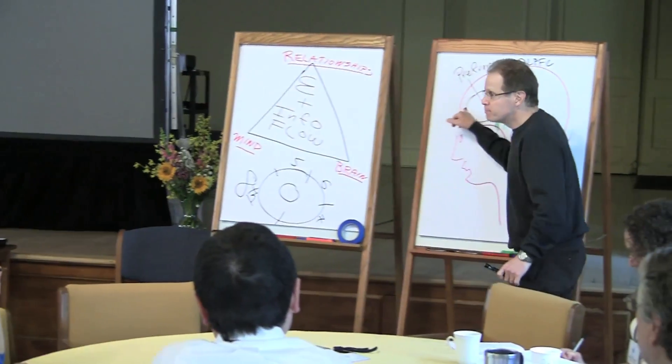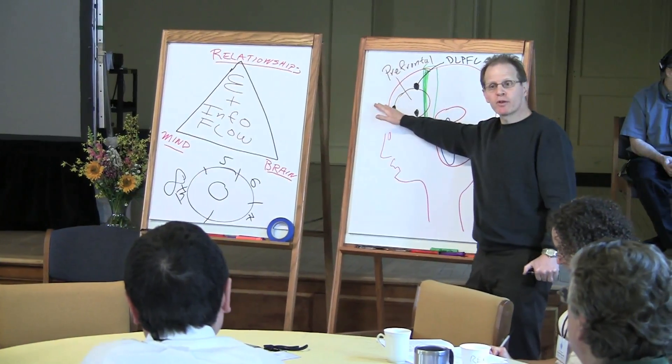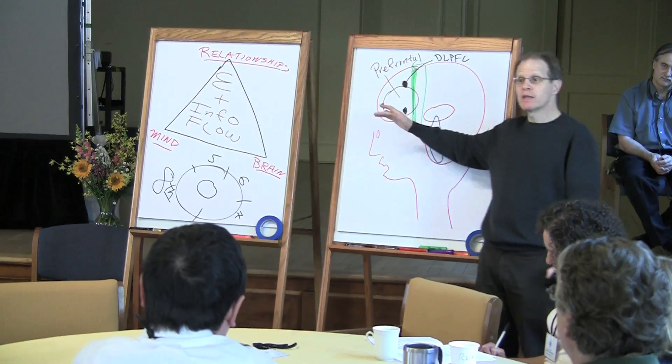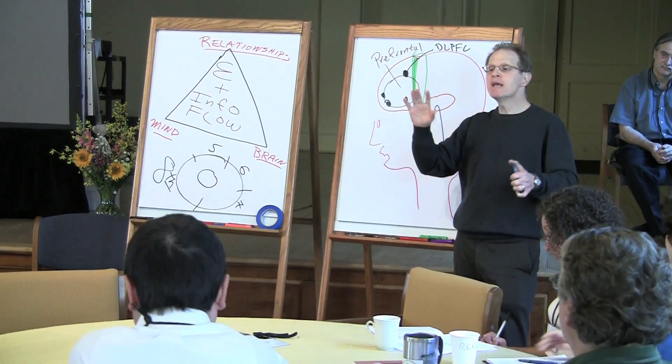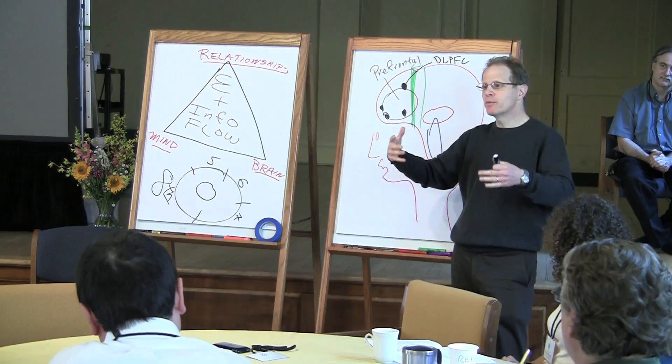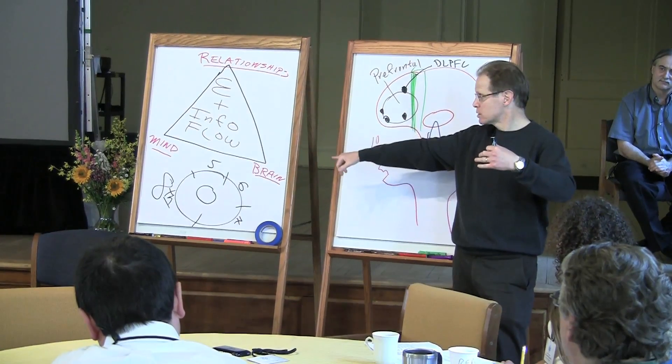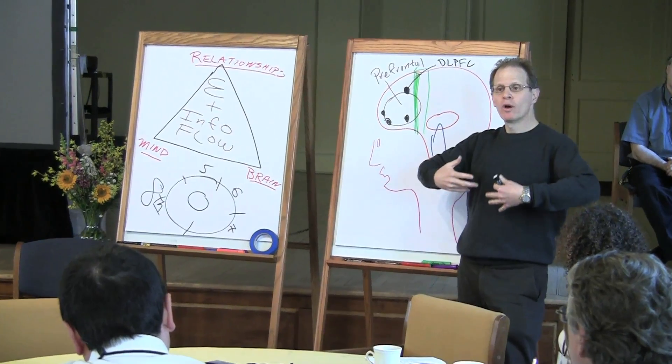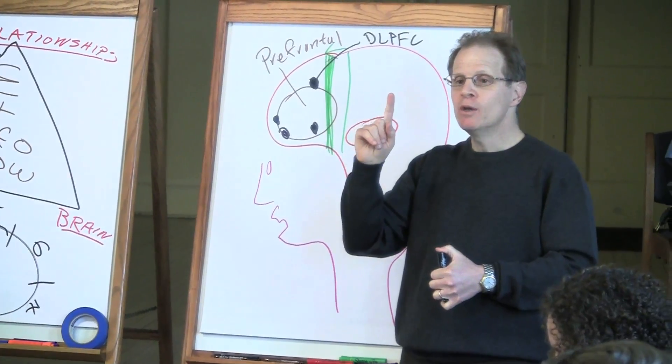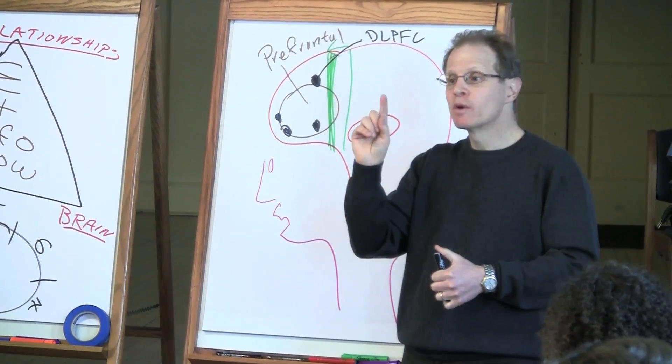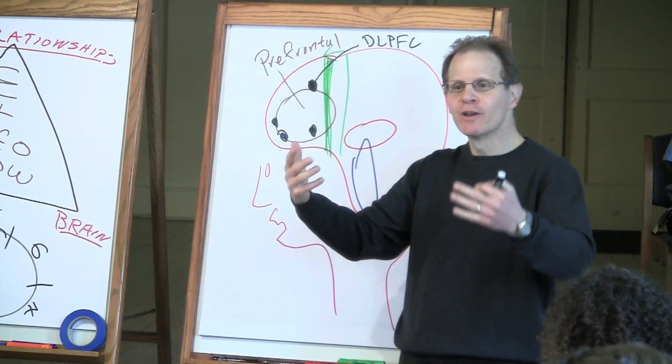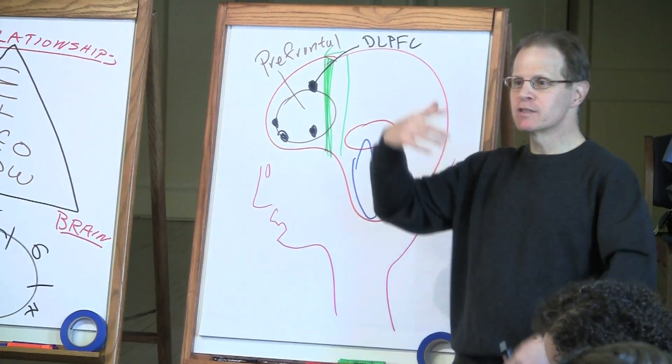You are building the strength of the middle prefrontal areas to do three major things that I'm going to stop. Number one, this area allows self-awareness to develop. And the amazing irony of reflective practices is that as you develop this capacity, just in the metaphor of the Wheel, to have more attunement to yourself, this is the important word, self-attunement.